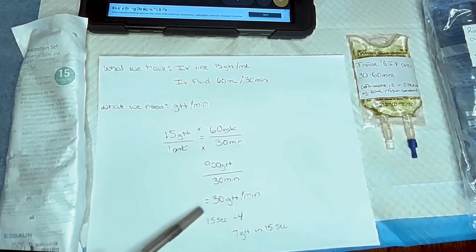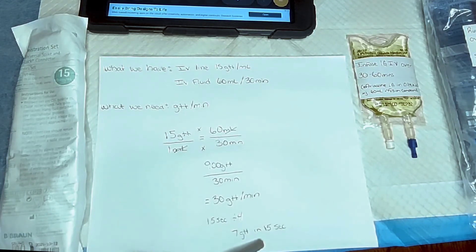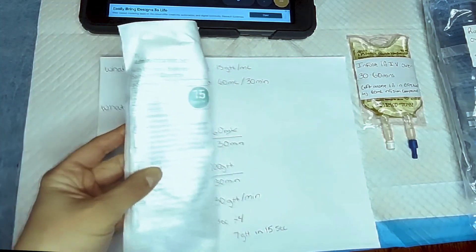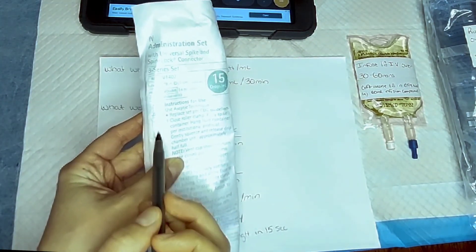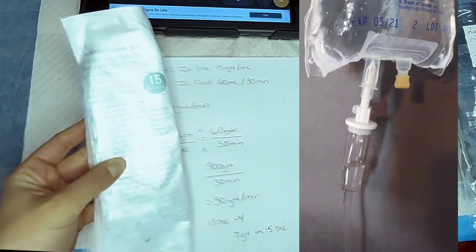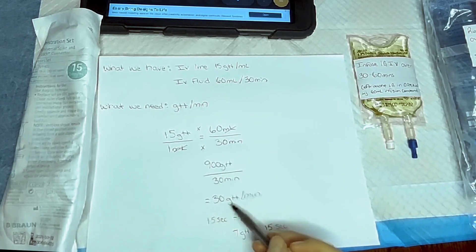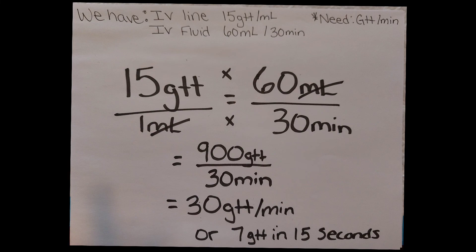You don't have to count in 15-second intervals, but I find it a lot quicker. When you're counting the drops, you're watching the drip chamber — the fluid drops from up here into the chamber, drip by drip — that's what you're counting. You want seven drops in 15 seconds, or you can count for the full minute and confirm 30 drops per minute. Here's an up-close look at the calculation — that's all I have for this video, catch you next time.